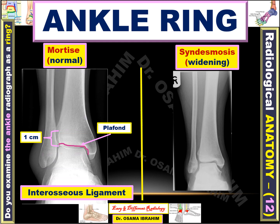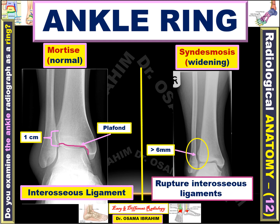This distance should not exceed more than six millimeters to be considered normal. If we look at the other image, we can see the distance between the tibia and fibula appearing more than six millimeters, and this represents rupture of the interosseous ligament. So we can suspect or diagnose interosseous ligament rupture by X-ray through these rules.